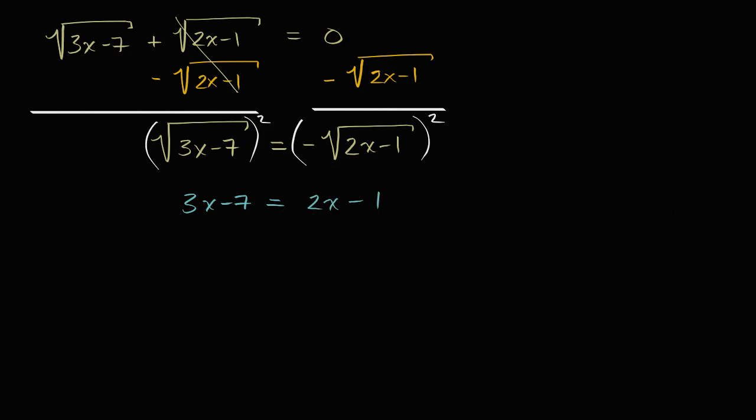We can subtract two x from both sides to get all of our x's on one side. And we can add seven to both sides because I'm trying to get rid of the negative seven.